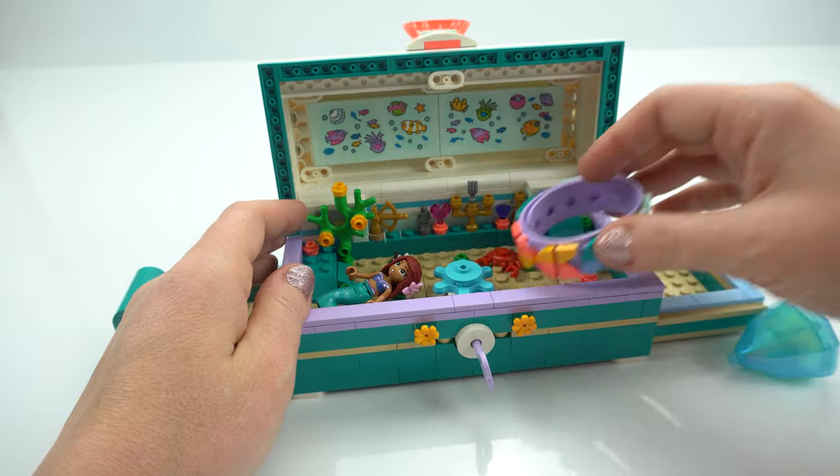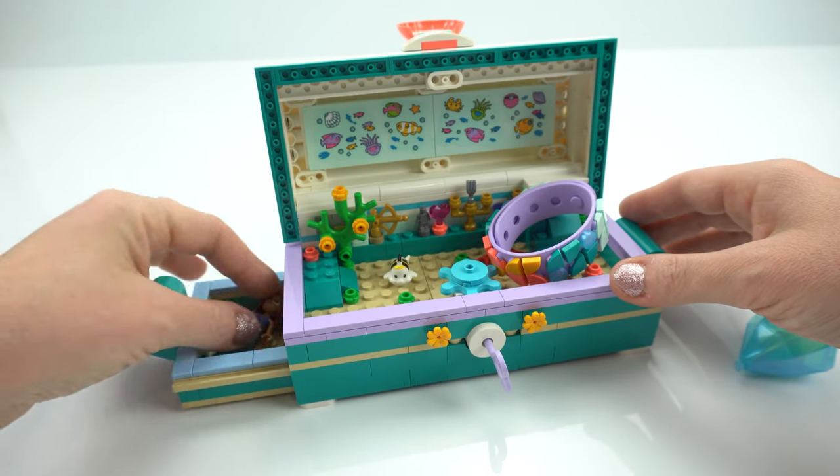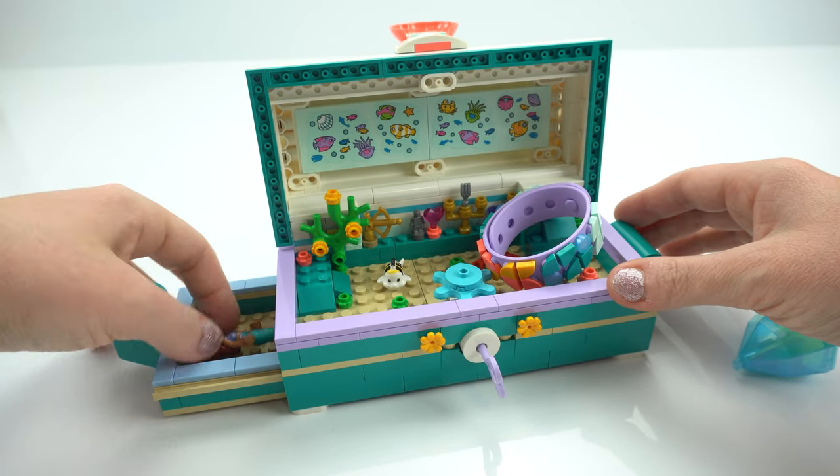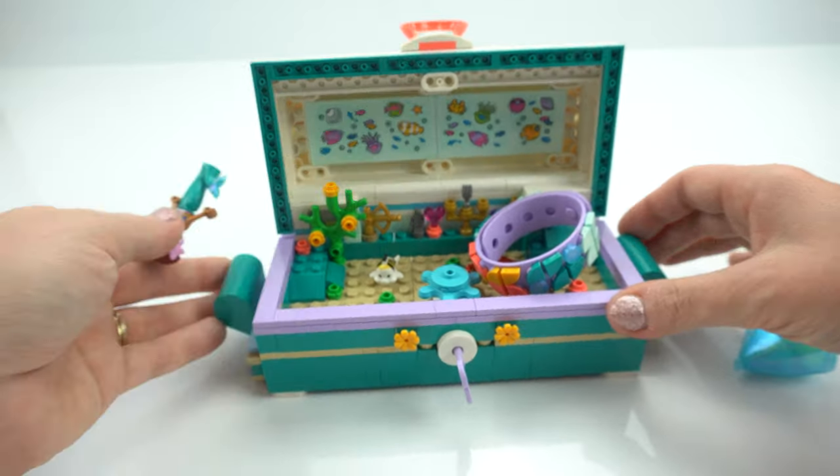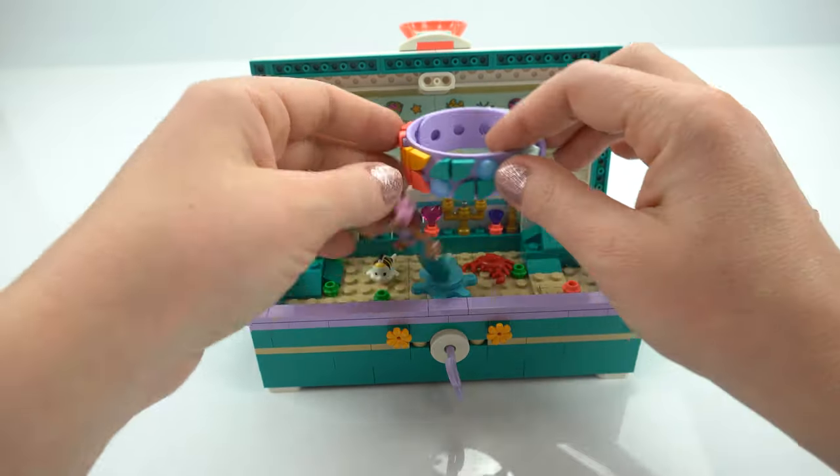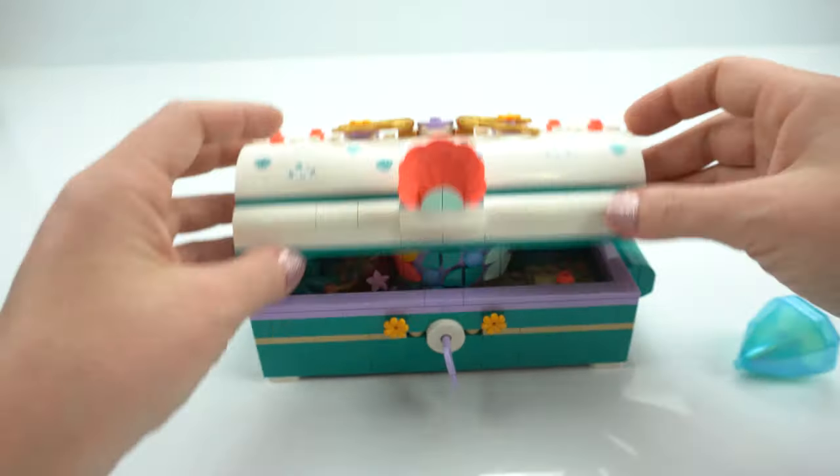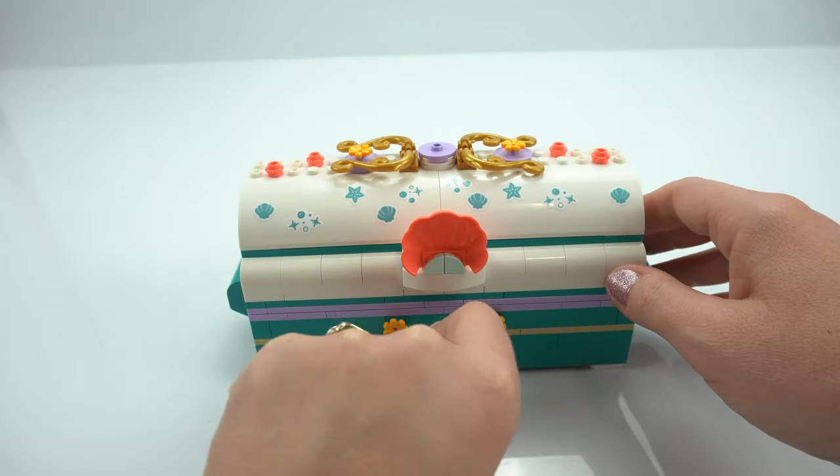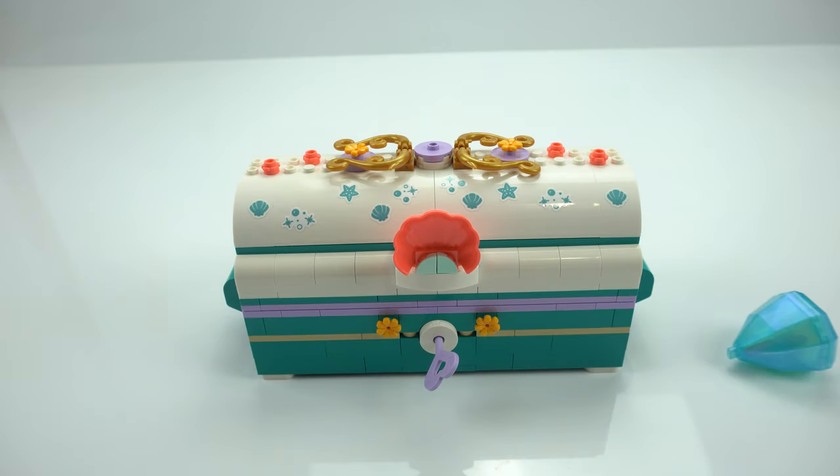Now, here are the drawers. The disappointing thing is the bracelet doesn't quite fit. Neither does Ariel. But if you had your own treasures or jewelry that you'd like to keep in there, I'm sure the smaller pieces could fit. You've got to rearrange things so it works. We hope you enjoyed the build. Thanks for watching. See you in the next one.